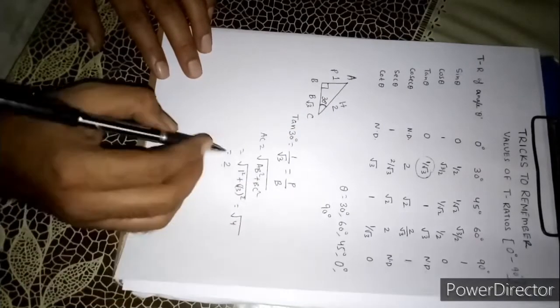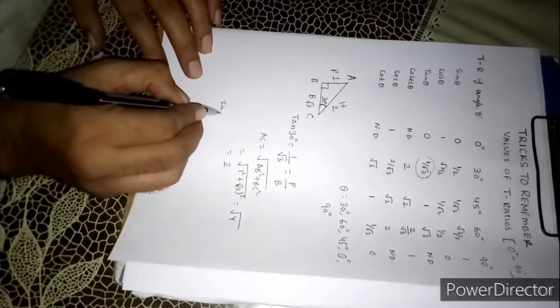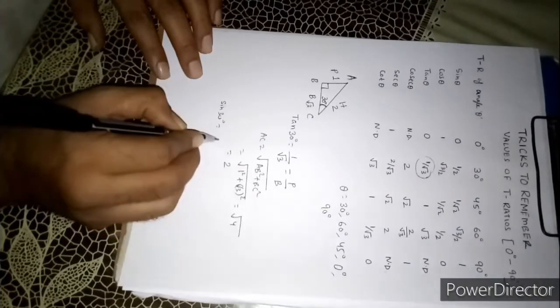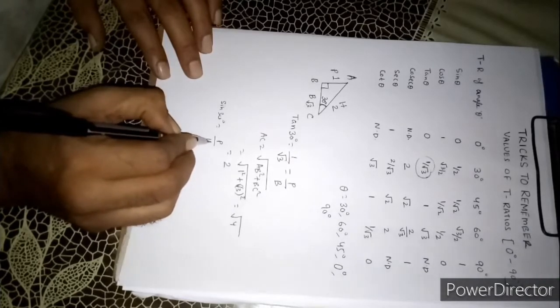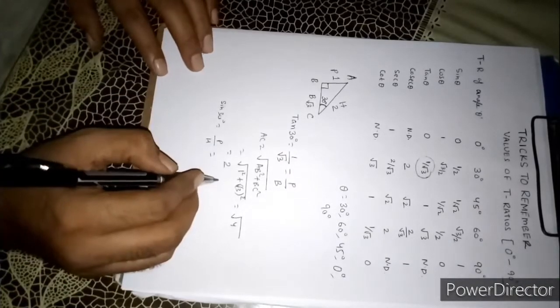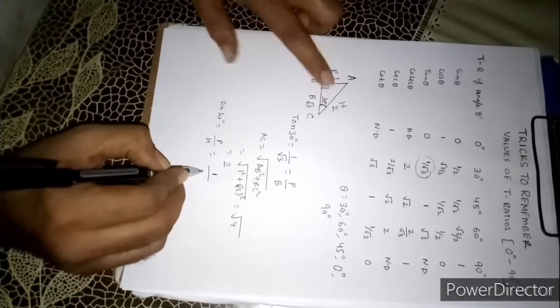Now it becomes very easy. If you want to find sin 30, sin 30 is what? Sin theta is P by H. Now see what is P? P is here 1. And what is H? H is 2.